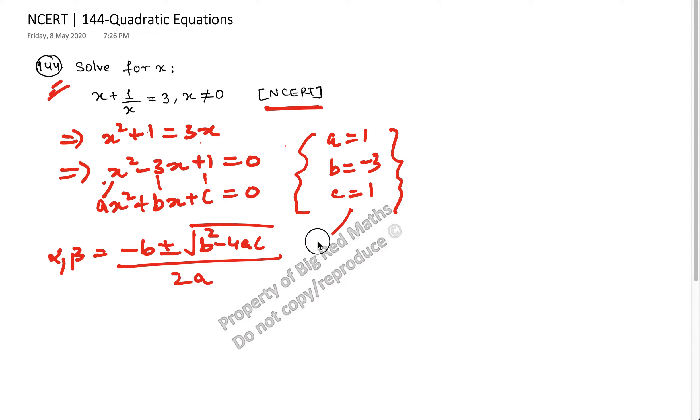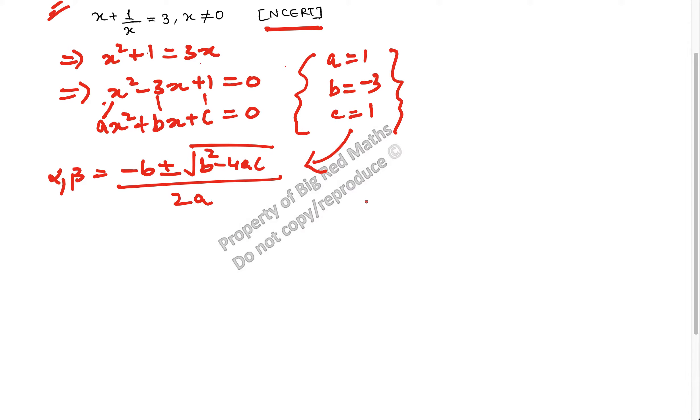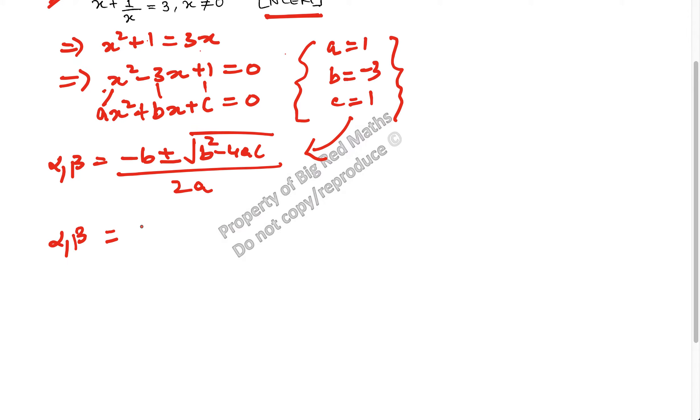These are the values, and let's put these values into this formula. When we put these values in the formula, alpha and beta becomes minus of b, which is minus of minus 3, so plus 3, plus minus square root of b squared which is 9 minus 4 times a which is 1 times c which is 1, and this whole thing divided by 2a which is 2 times 1.